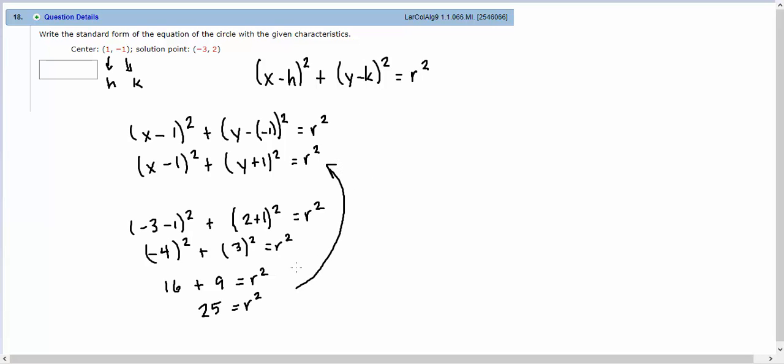And we use this last step to find that r squared was 25. So our final answer here will be x minus 1 squared plus y plus 1 squared equals 25. And that will be the final answer that we would type into the box.